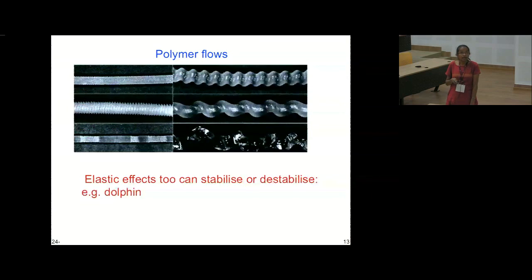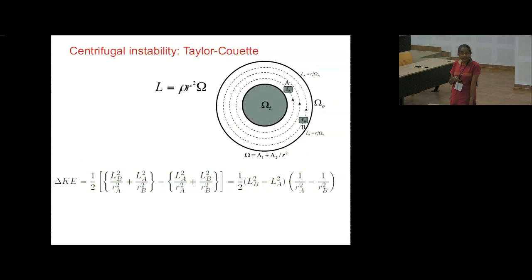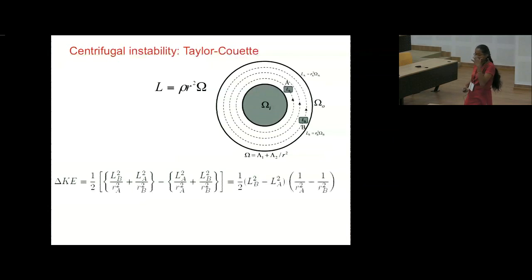Polymeric flows display many kinds of funny instabilities — they can stabilize or destabilize. Elastic effects can stabilize or destabilize. For example, a dolphin's skin is supposed to stabilize the boundary layer and make it more laminar, so a dolphin can go further by eating less, unlike a submarine. The Taylor-Couette instability involves two concentric cylinders with fluid between them rotating differentially — the inner at omega_i and the outer at omega_o. You can show that if a blob of fluid at radius A and radius B are interchanged, the change in kinetic energy will grow if the inner cylinder is rotating way faster than the outer, making it unstable, and decay if it's stable.